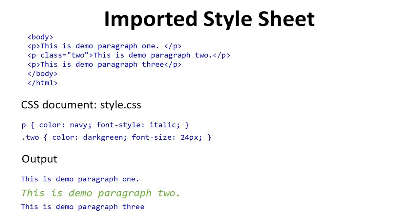In the CSS file, for the P tag, color is navy and font-style is italic. For class 2, color is dark green and font-size is 24 pixels. The output of this program shows 'This is demo' in blue color, 'This is demo 2' in italic, and 'This is demo' also in blue color.